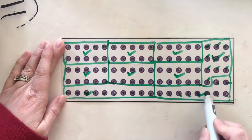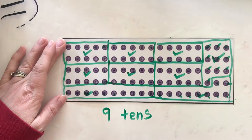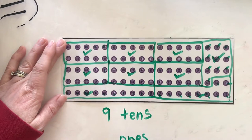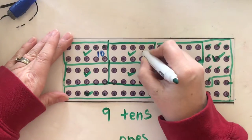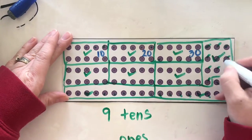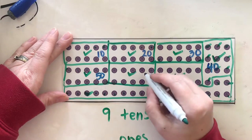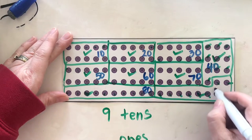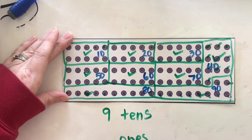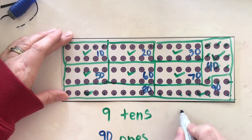I'm going to check off as I count — one, two, three, four, five, six, seven, eight, nine — so there are nine tens. Nine tens will equal blank ones. Let's count by tens: ten, twenty, thirty, forty, fifty, sixty, seventy, eighty, ninety. So the value of nine tens equals ninety ones.